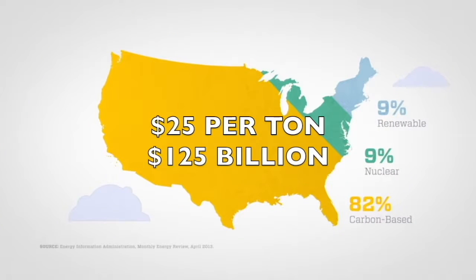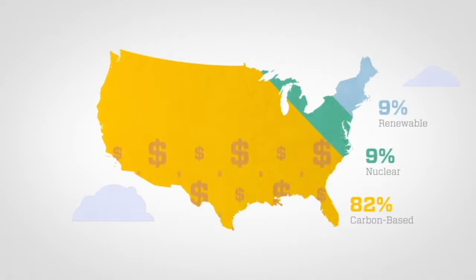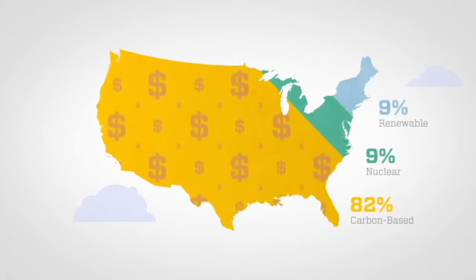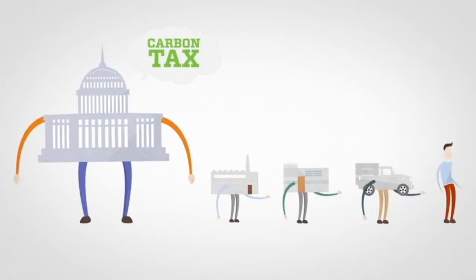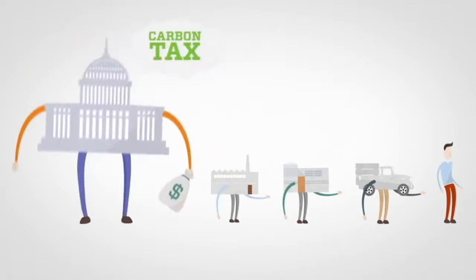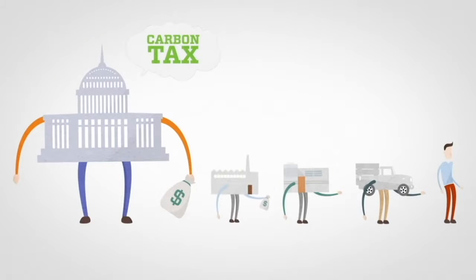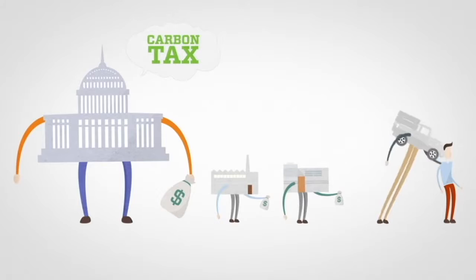If we were to charge $25 per ton, that would generate $125 billion from those who produce the carbon emissions. This would increase prices as those producers pass the cost on to the manufacturers, who then pass it on to the distributors, until ultimately it finds its way to the consumer.